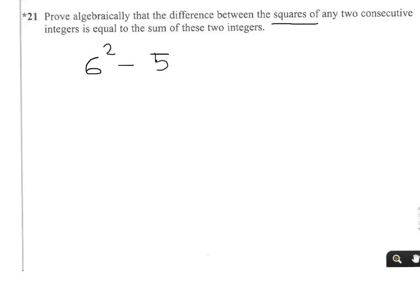So the difference of the squares then would be 6 squared minus 5 squared. And we're told that this would be equal to the sum of these two integers. So the sum of these two integers would be equal to 6 plus 5. So let's just quickly check that. That would be 36 take 25 equals 11, which is true.